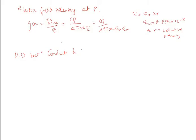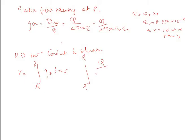The potential difference between the conductor and the sheath is given by V = integration from small r to capital R of Gx dx. Substituting Gx = Q/(2πε₀εᵣ) × (1/x), and noting that small r = d/2 and capital R = D/2.